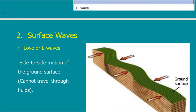The L wave (Love wave) is the second type of surface wave. The surface moves right and left — side-to-side motion of the ground surface. Imagine forces pushing the surface alternately from different sides, squeezing or twisting it. Importantly, Love waves cannot travel through fluid — if the wave needs to cross a river or sea, it stops at that location and does not continue.